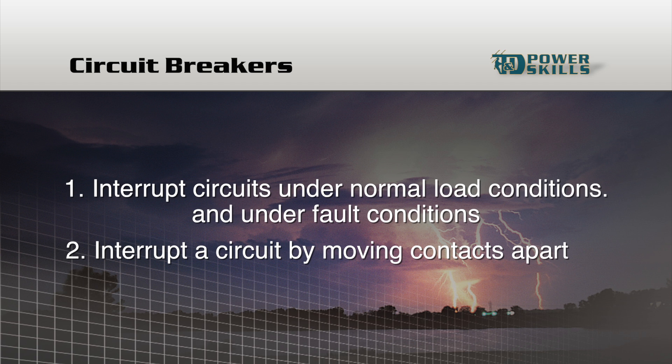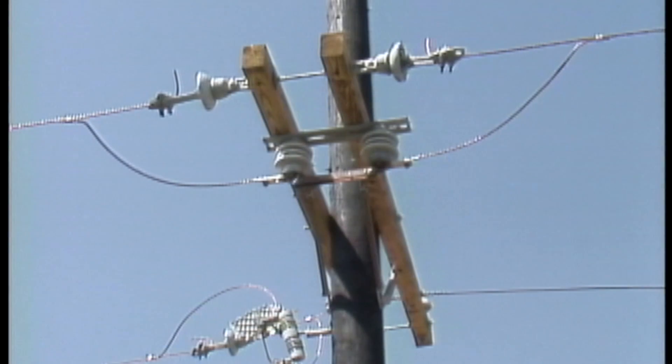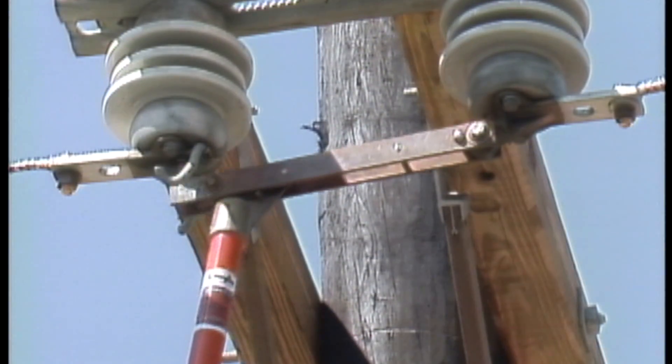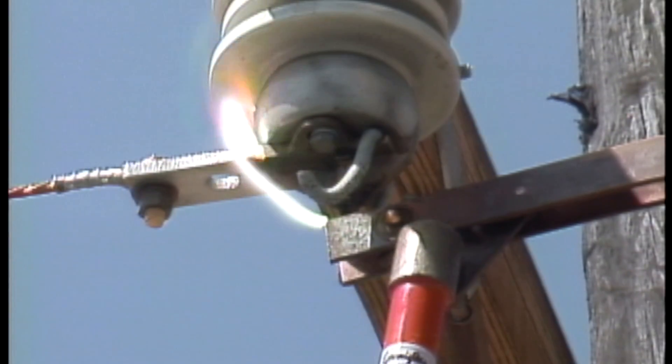A controlled arcing demonstration using a disconnect will help to show why. In this demonstration, a closed disconnect establishes or makes an energized circuit. When the disconnect switch is opened, current tries to bridge the gap in an attempt to maintain the circuit. The air heats up and becomes a conductor. As a result, an arc forms.